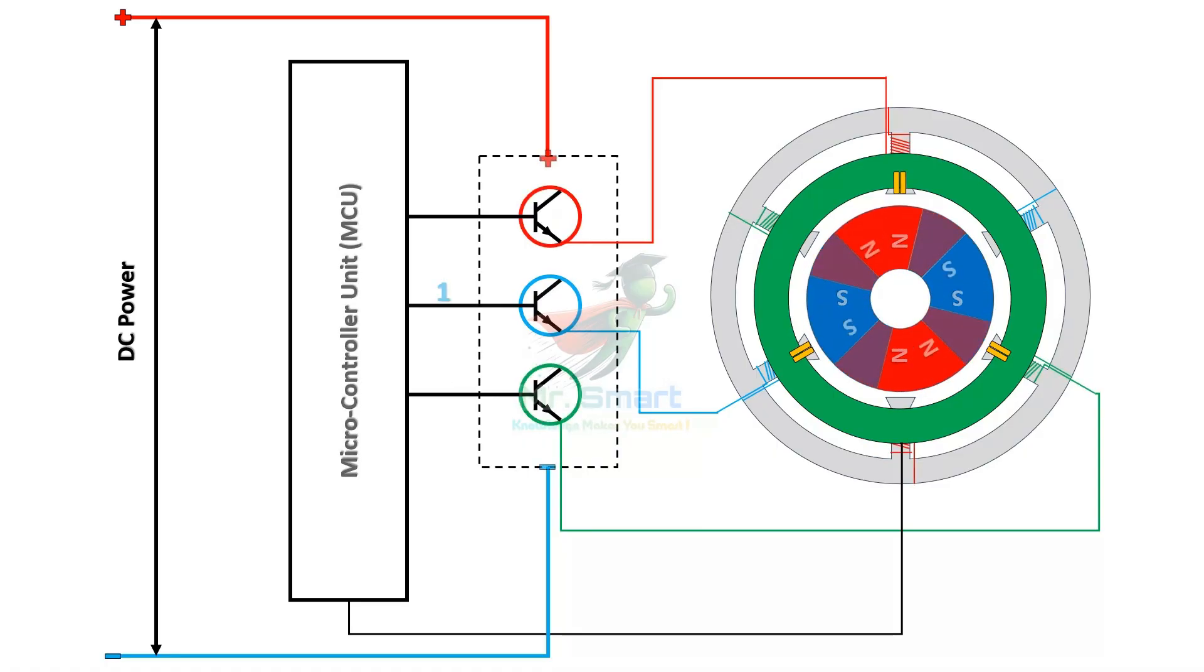The permanent magnet rotor follows this field, causing continuous motion. The MCU also controls the switching speed of the driver circuit, which is mandatory in speed control of the motor.